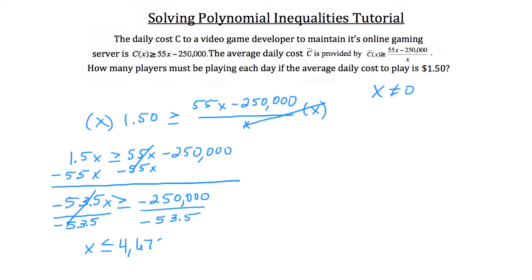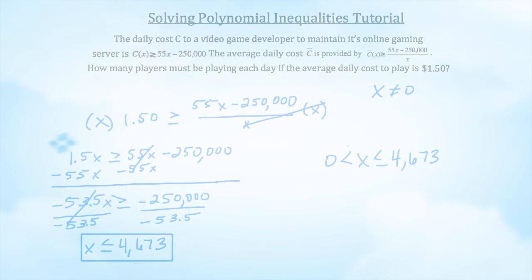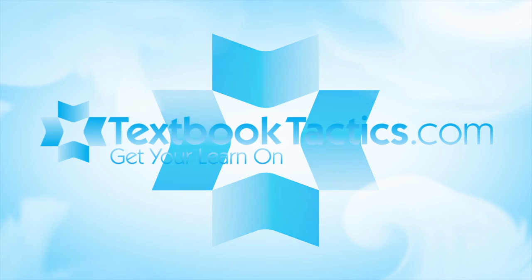So what this tells us is that we need some number of players greater than zero, but x must be less than or equal to 4,673. If there are more than 4,673 players playing, it's going to cost more than $1.50 to maintain that server.